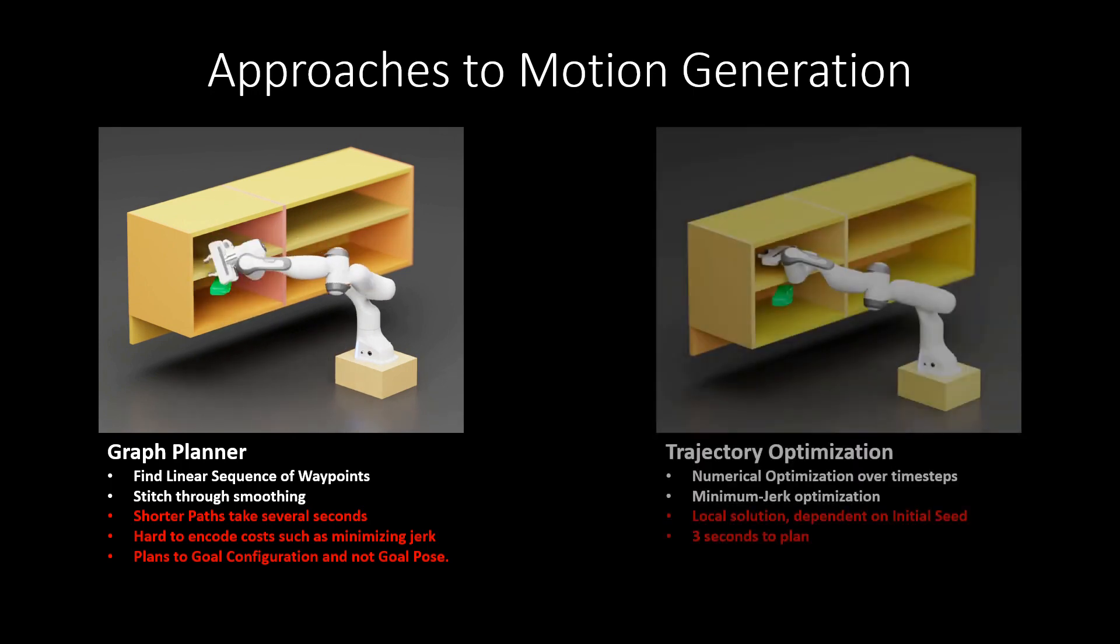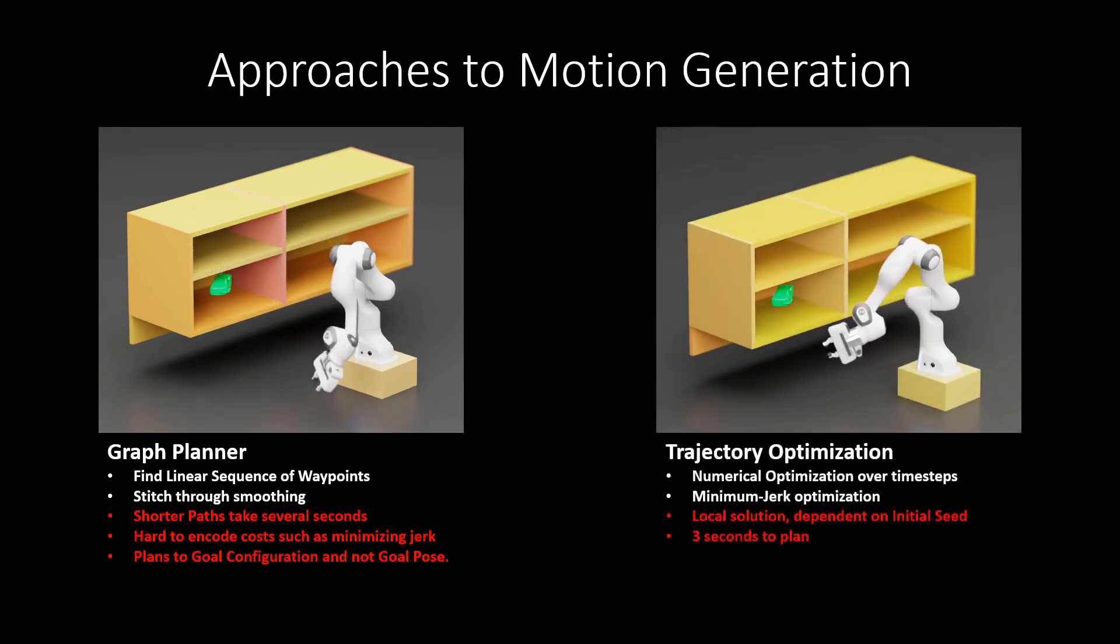The second approach through trajectory optimization enables us to add any additional costs such as minimum jerk and the output trajectory can also be directly sent to the robot. However, the solution is heavily reliant on the initial seed and most trajectory optimization methods also take two to three seconds to plan a motion for a manipulator.